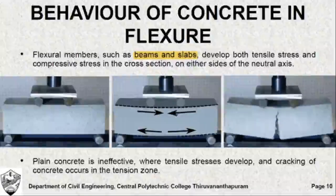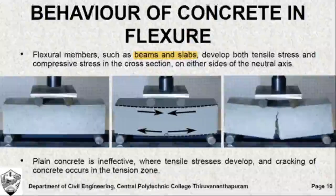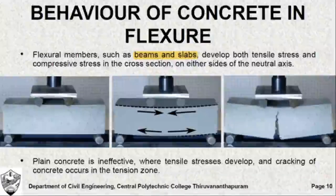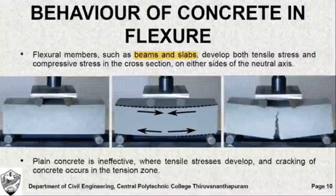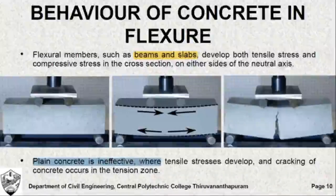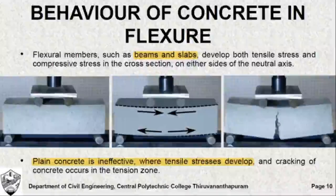Hence, the top fibers are subjected to compressive stress while the bottom fibers are subjected to tensile stress. Since the tensile strength of concrete is very small, it is expected that the extreme fiber at the bottom where the tensile stress is large shall fracture first and the crack propagates upward. Hence, plain concrete is absolutely ineffective where tensile stresses develop and cracking of concrete occurs first here.